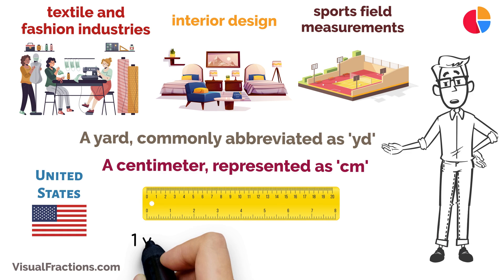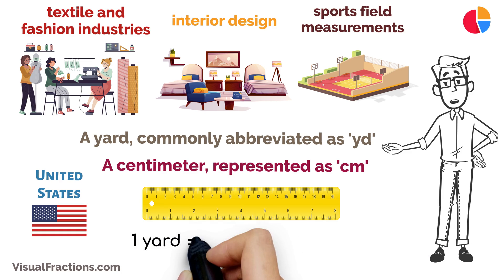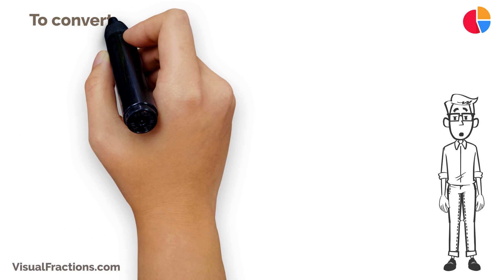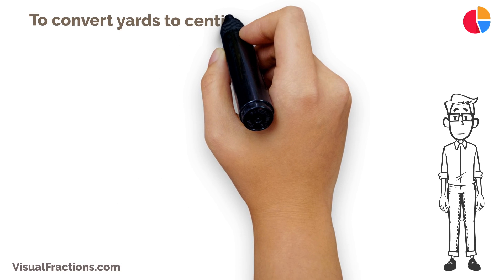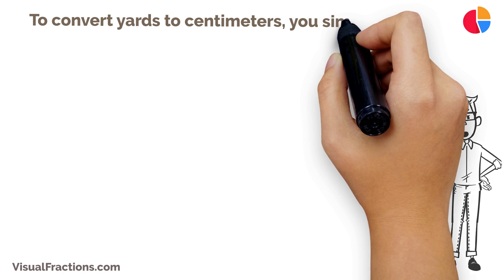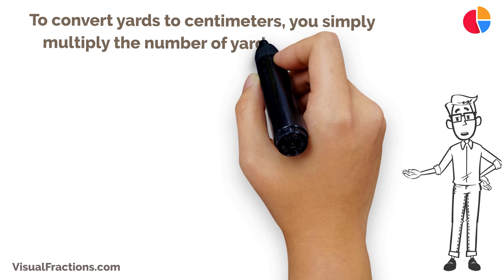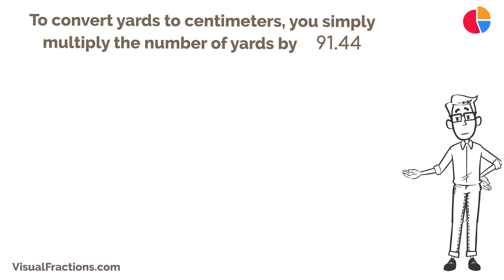Here's the key conversion factor: one yard equals exactly 91.44 centimeters. To convert yards to centimeters, you simply multiply the number of yards by 91.44.